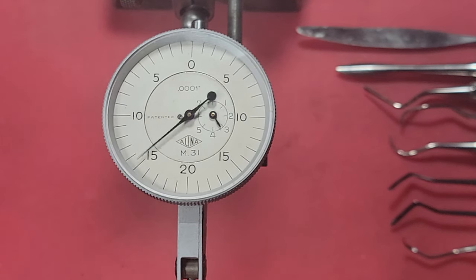This is an Alina tenths indicator, and the sticker on it says that it was last calibrated in 1982. So we're going to open it up, make sure that it's all nice and clean inside, try to get it set on zero, and then close it back up.